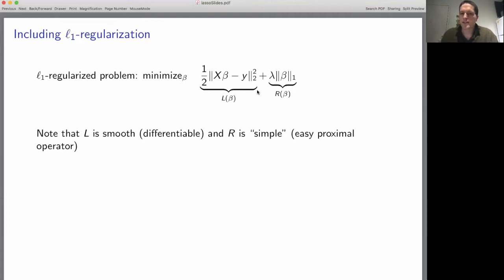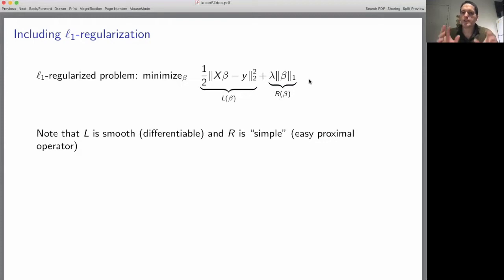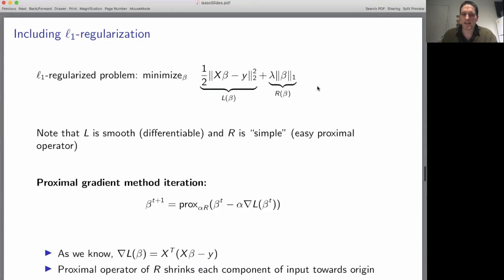We already know how to compute the gradient of L — that's a standard computation from least squares. And we've already learned how to compute the proximal operator of the L1 norm in a previous video. So that means we are ready to solve this optimization problem using the proximal gradient method.